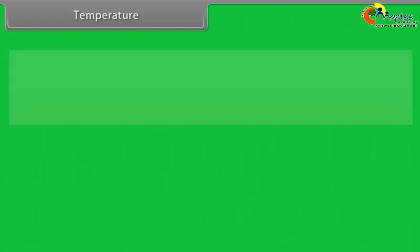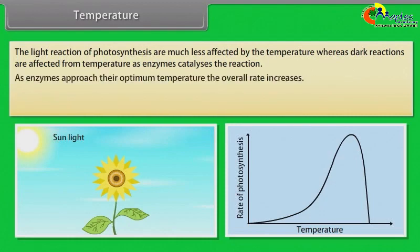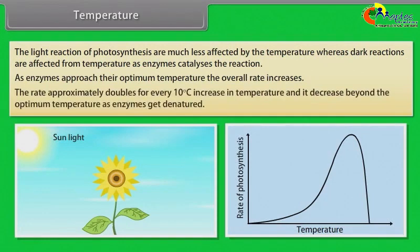Temperature: The light reaction of photosynthesis is much less affected by temperature. Whereas dark reactions are affected by temperature as enzymes catalyze the reaction. As enzymes approach their optimum temperature, the overall rate increases. The rate approximately doubles for every 10 degrees Celsius increase in temperature and decreases beyond the optimum temperature as enzymes get denatured.